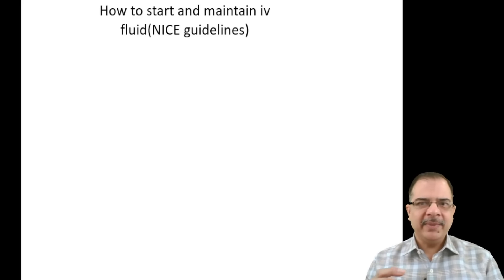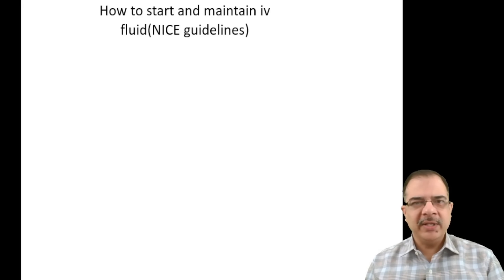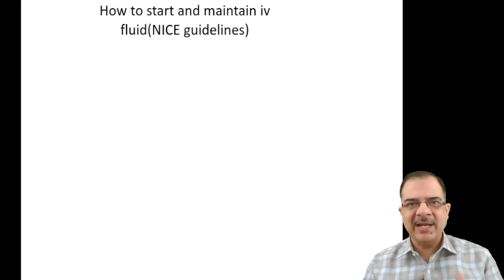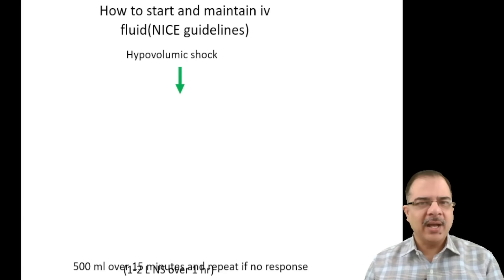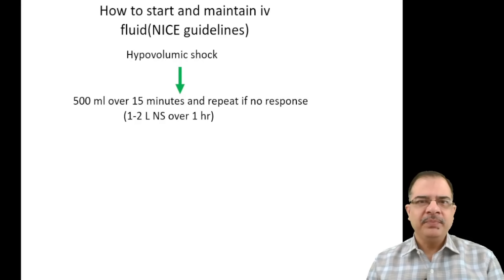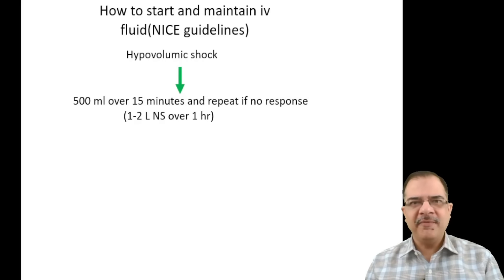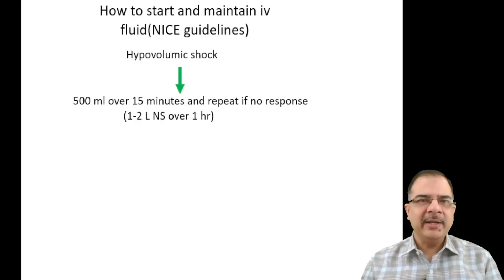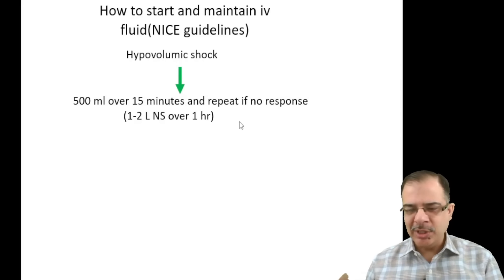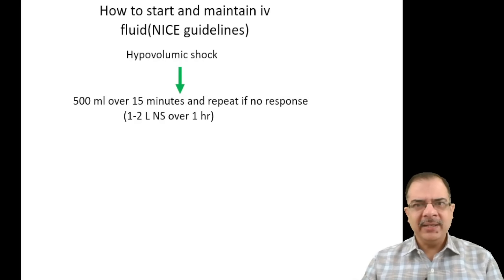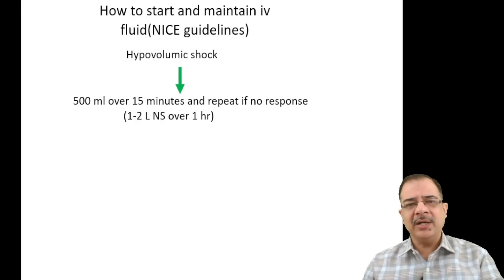When a patient presents with hypovolemia or dehydration from diarrhea, the best initial IV fluid is isotonic saline (normal saline). Give 500 ml over 15 minutes as a bolus dose. If there is no response, repeat 250–500 ml every 15 minutes. In one hour, 1–2 liters of normal saline can be given. Then assess clinical features, electrolytes, and acid-base status before switching to other fluids.